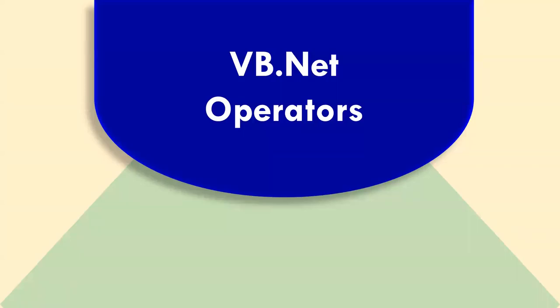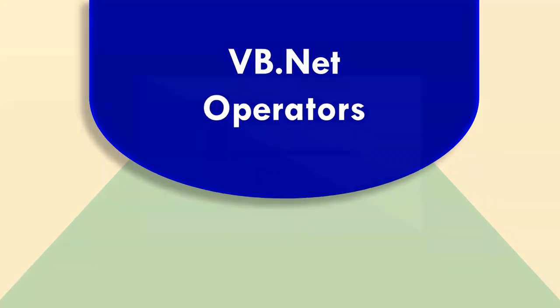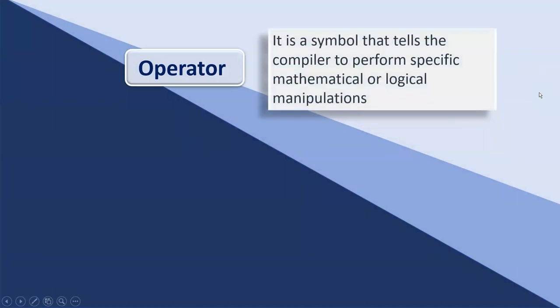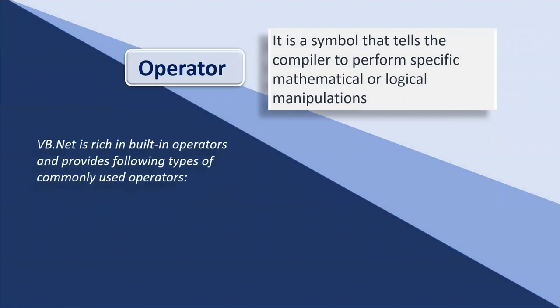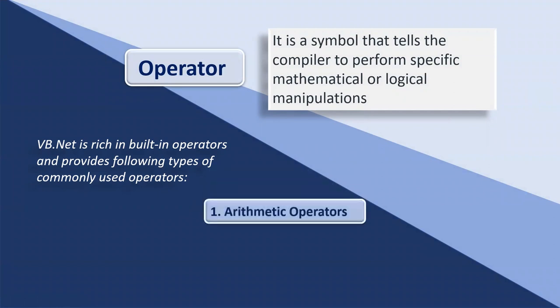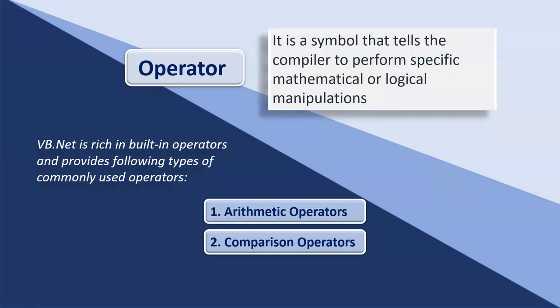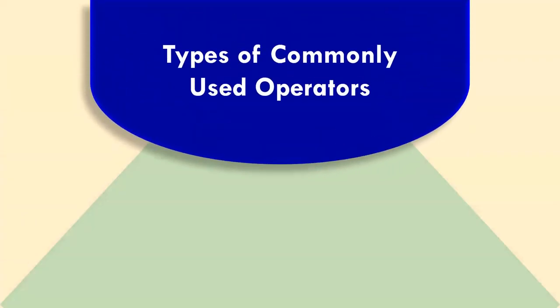Welcome to our VB.NET operators lecture video. An operator is a symbol that tells the compiler to perform specific mathematical or logical manipulations. VB.NET is rich in built-in operators and provides the following commonly used types: arithmetic operators, comparison operators, and logical operators.